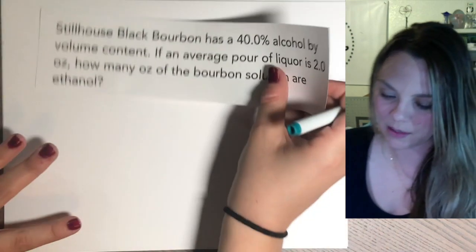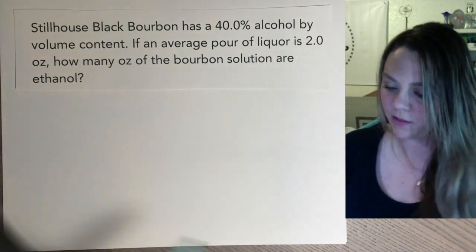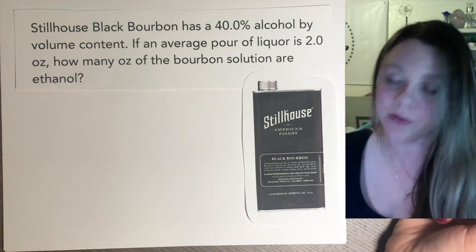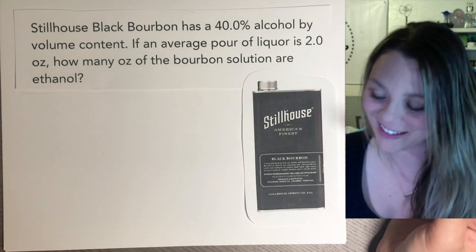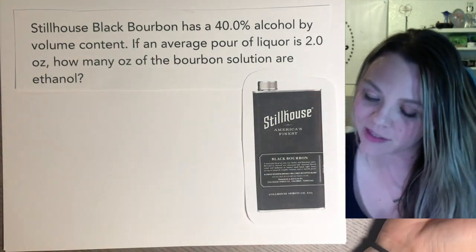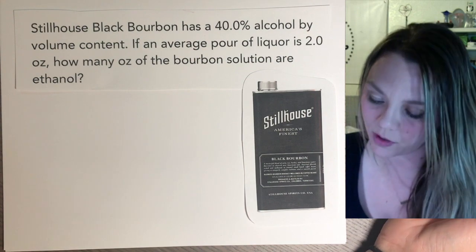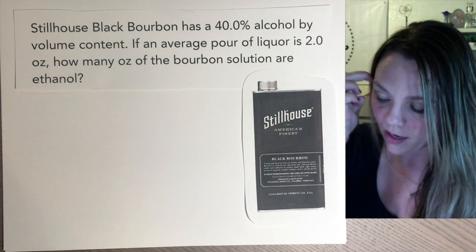If I did another of the same type of problem: Stillhouse Black bourbon — my husband's favorite; we jokingly say it looks like it came out of a paint thinner can — Stillhouse Black bourbon has 40% alcohol by volume content. If an average pour of liquor is two ounces, how many ounces of the bourbon are actually ethanol?